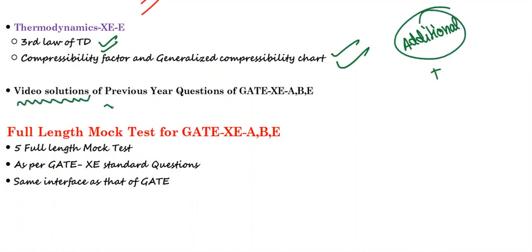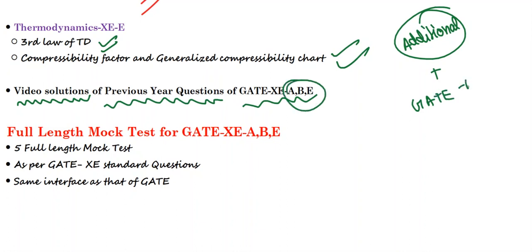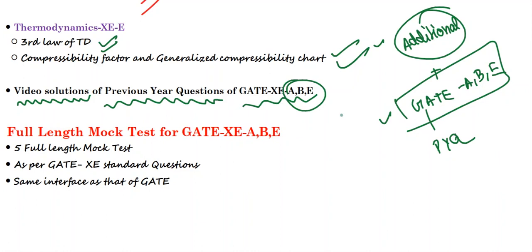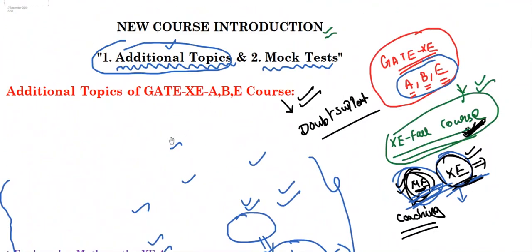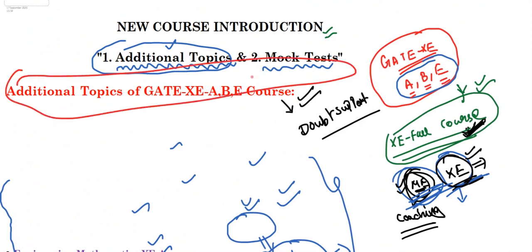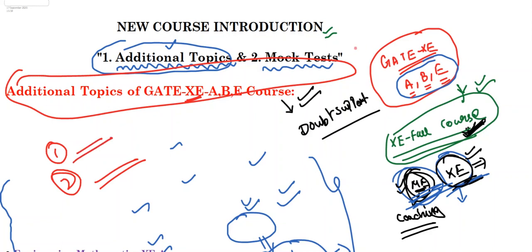Plus, as you can see, video solutions for all previous year questions of GATE XC — A, B, and E — are included. All previous year questions will have separate video solutions. So the additional topic course covers: all additional topics in GATE XC other than ME, and all previous year questions of GATE XC with video solutions. Once after completing this course, you will be able to attempt all questions from the additional topics and solve all previous year questions of XC.